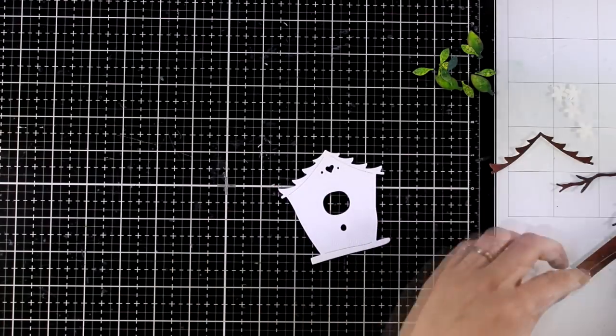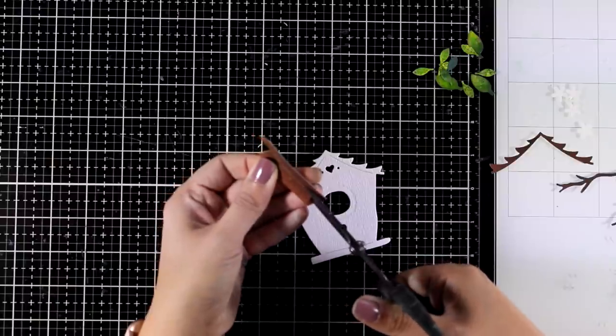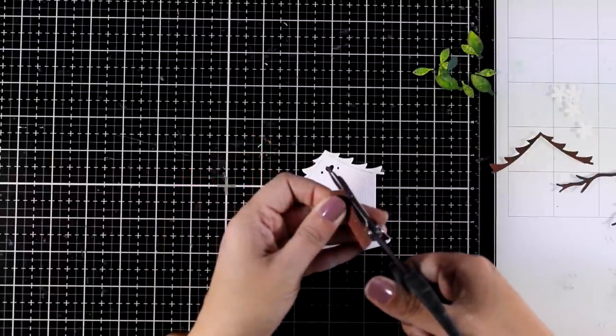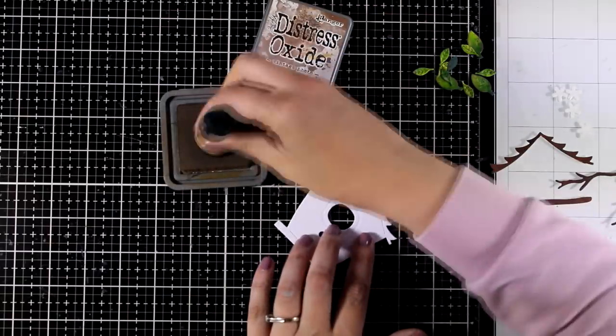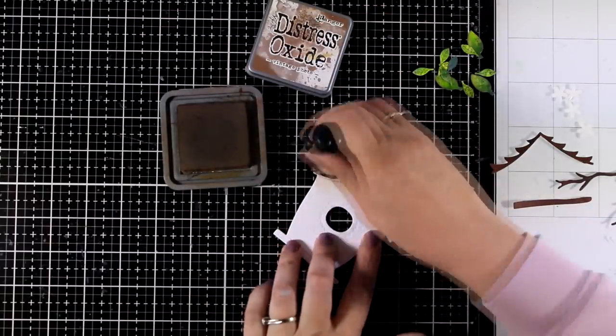And I'm also going to bring in the other piece, and this is just the bottom of the house. Again, very easy to separate that branch. These are pieces that I will use on top of my actual birdhouse to give it more dimension.